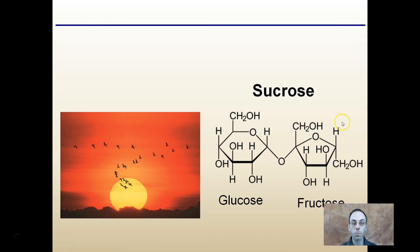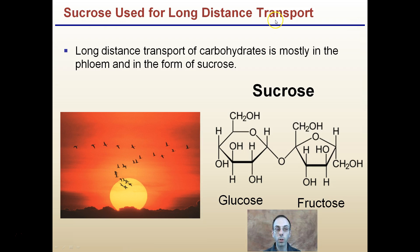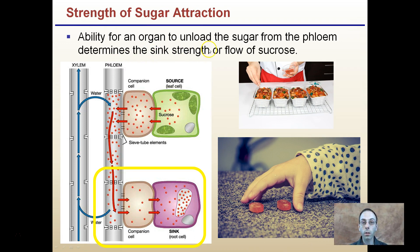Sucrose is typically used for long-distance transport. Long-distance transport of carbohydrates is mainly in the phloem and mainly in the form of sucrose. Sucrose is a disaccharide of glucose and fructose linked together, transporting from a source cell all the way to a sink cell. The strength of sugar attraction — the ability of an organ to unload sugar from the phloem — determines the sink's strength. The sink's strength is how aggressively that sink is at grabbing sugars and pulling them from the phloem.